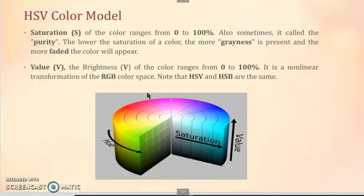Saturation of the color ranges from 0 to 100%. Also sometimes it is called purity of the color. The lower the saturation of a color, the more grayness is present. Saturation refers to how far color is from gray of equal intensity. Red is highly saturated whereas pink is relatively unsaturated.